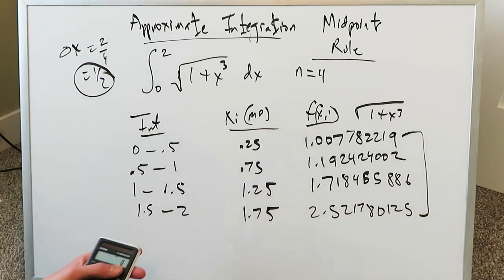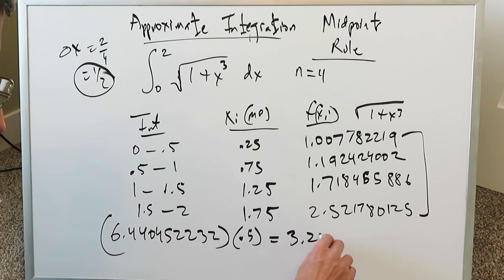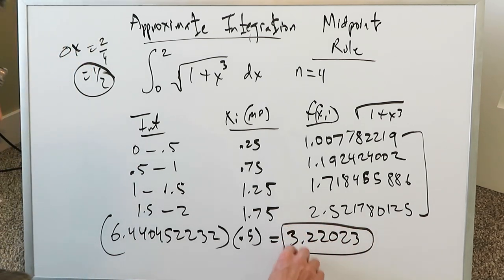The total value I get over here with regards to the sum is 6.440452232 and then I have to multiply it by delta x which is 0.5 and when we do that I get a value here 3.22023 that represents the area below the curve for that specific function over there if you were to graph it out from 0 to 2 you would have that area below the curve.